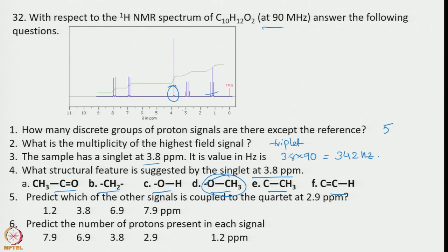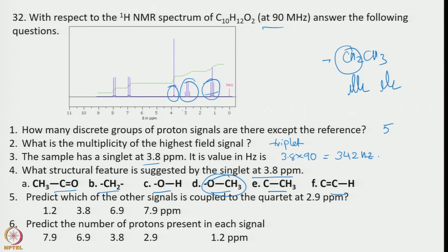Next: predict which of the other signals is coupled to the quartet at 2.9 ppm. A quartet means in the neighborhood there should be 3 protons. For example, if you consider CH2-CH3, the CH2 would show a quartet and the CH3 a triplet. Looking into the signals and the separation of individual lines in these multiplets, we can tell it is coupled with the signal at 1.2 ppm.